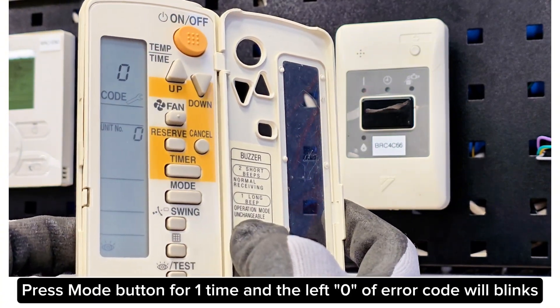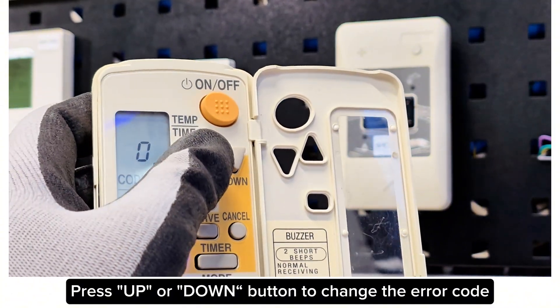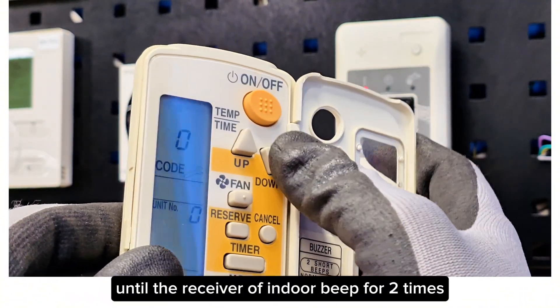Press Mode button for one time and the left zero of error code will blink. Press Up or Down button to change the error code until the receiver of Indoor Beep for two times.